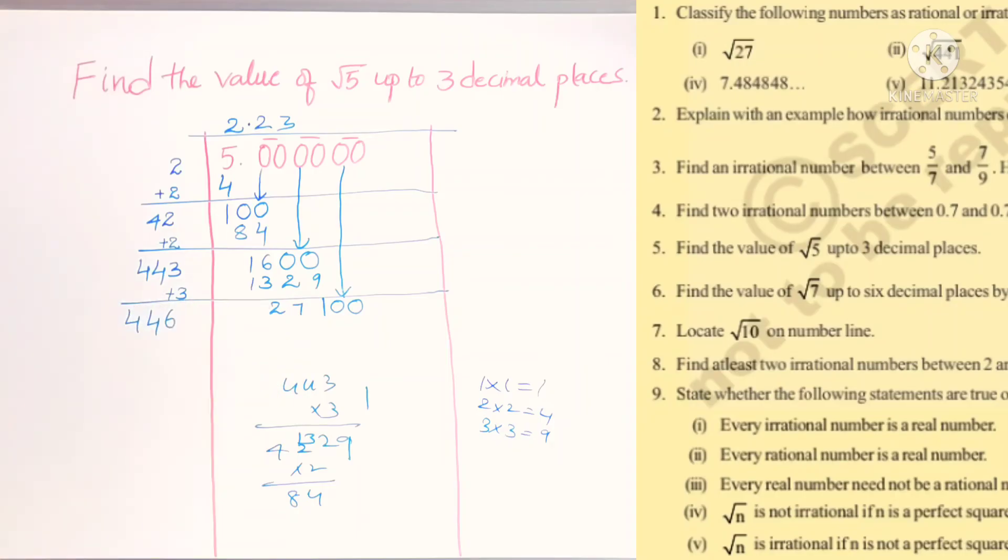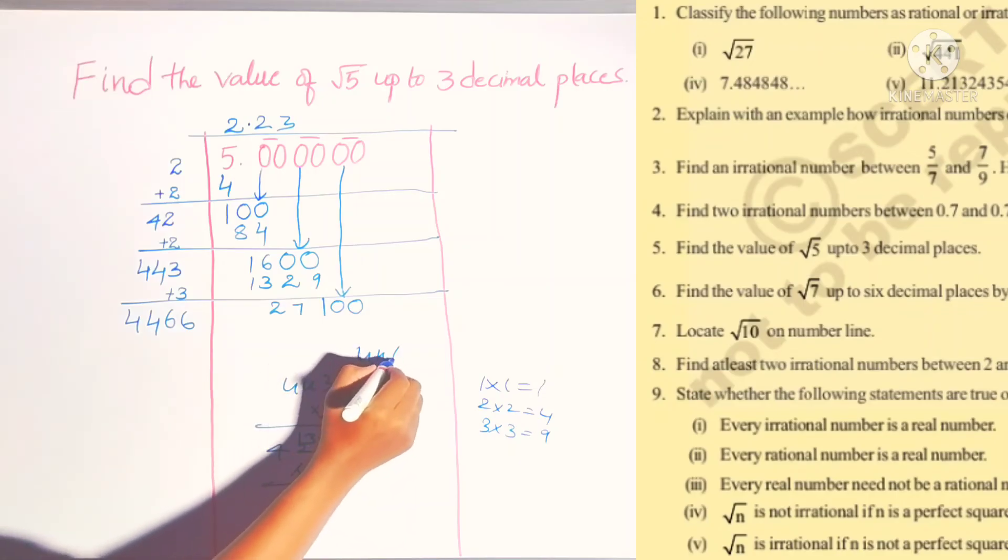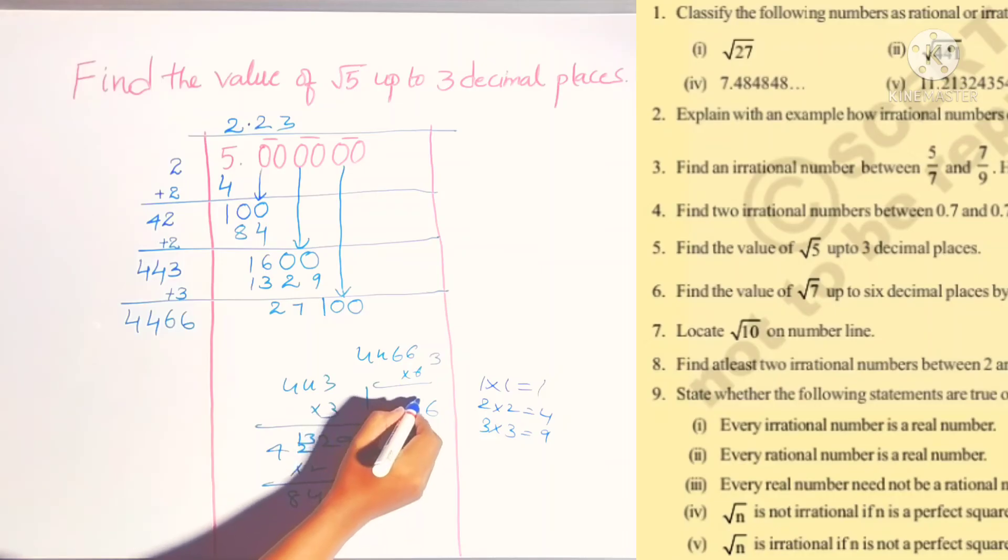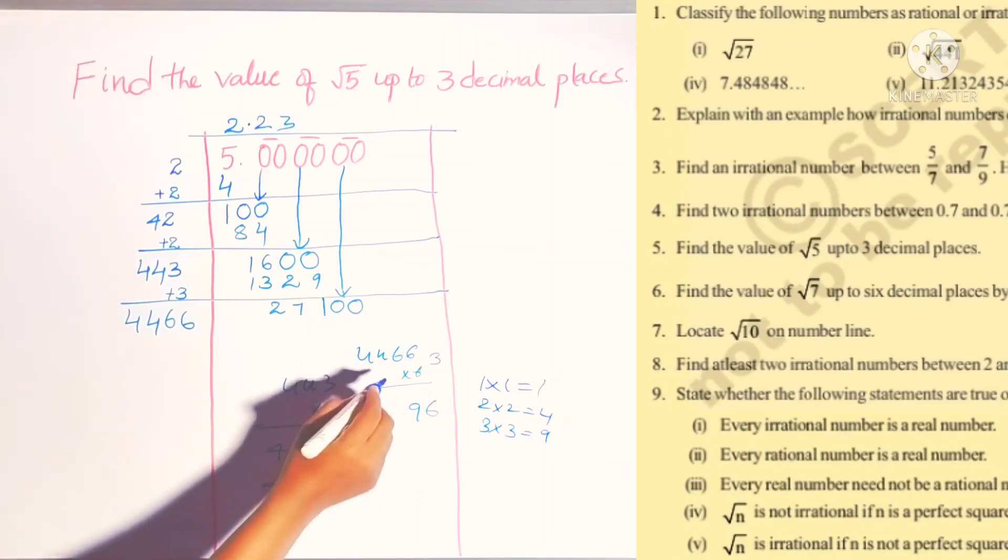Now 446 times 6: 6 times 6 is 36, 6 times 4 is 24 plus 3 is 27, again 6 times 4 is 24 plus 2 is 26. So this is 2676.